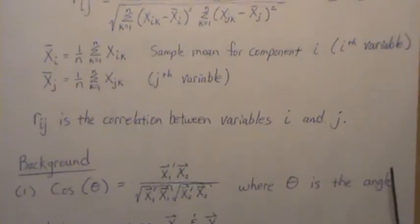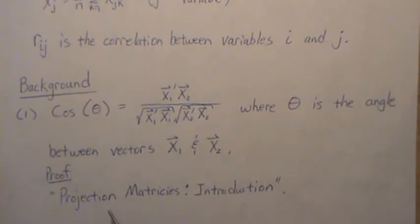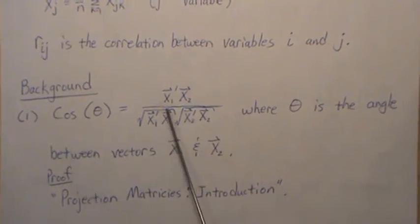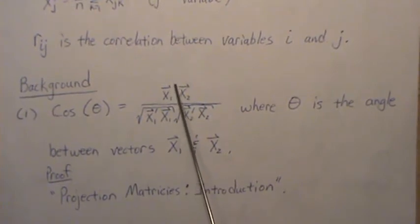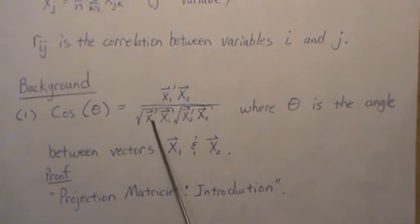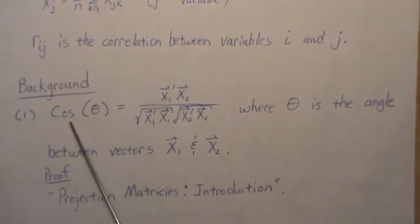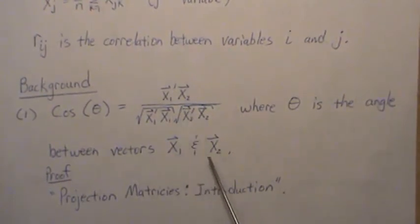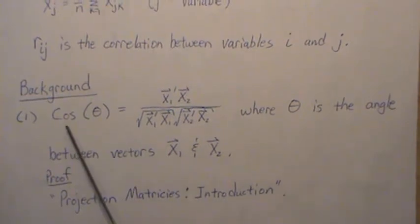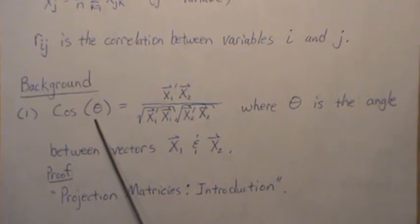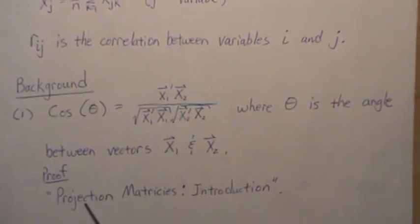A little background first. In a video I call Projection Matrices Introduction, we looked at if we had any two vectors, say x1 and x2, and we dot product — or matrix multiply — and divide by the length of each vector, that is equal to the cosine of theta, where theta is the angle between these two vectors. So if these vectors are living in space, you can create an angle between those vectors, and the cosine of that angle equals this. We prove it in that video.